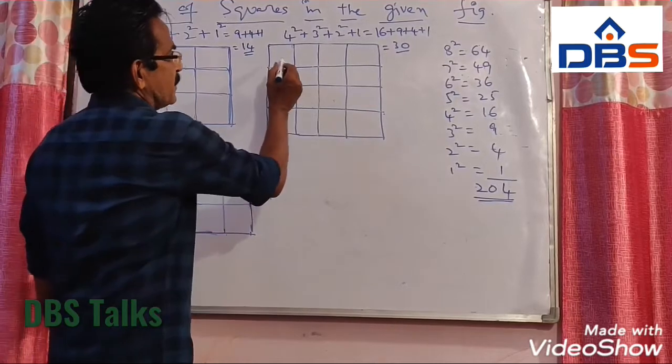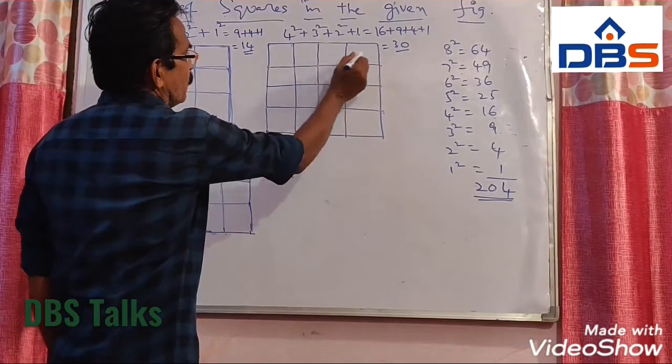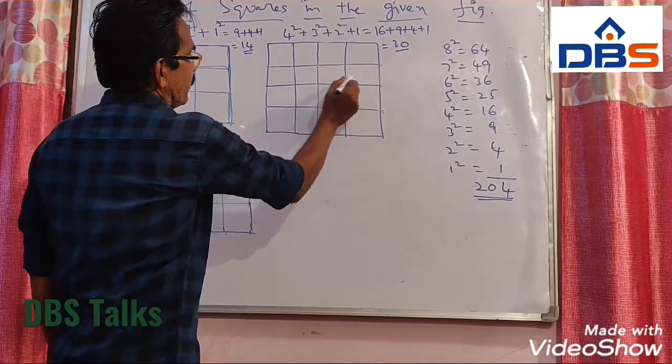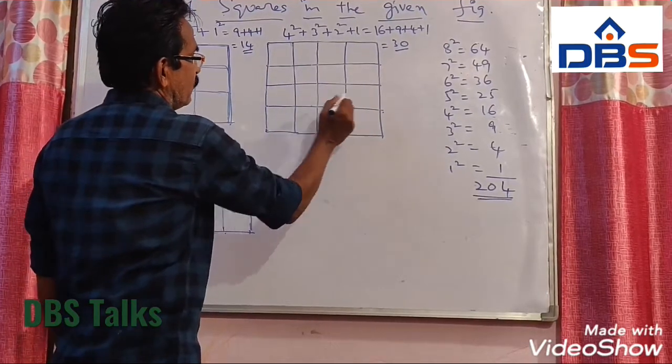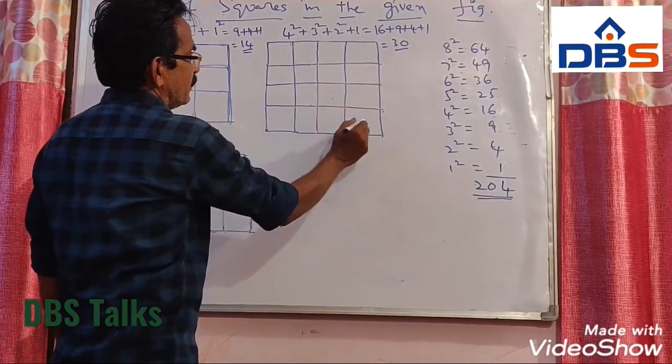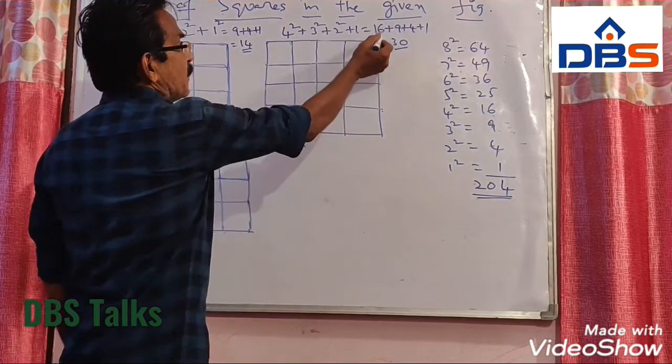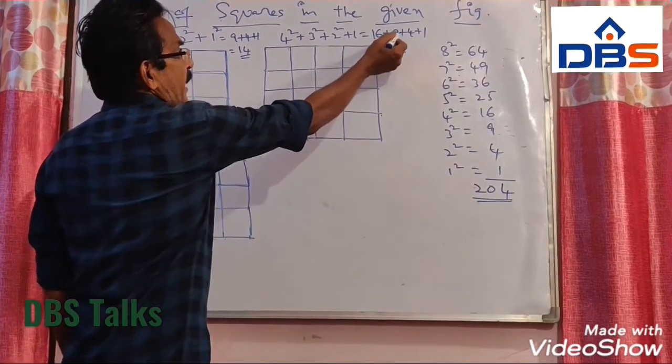So smaller squares: 1, 2, 3, 4, 5, 6, 7, 8, 9, 10, 11, 12, 13, 14, 15, 16 — 16 small squares.